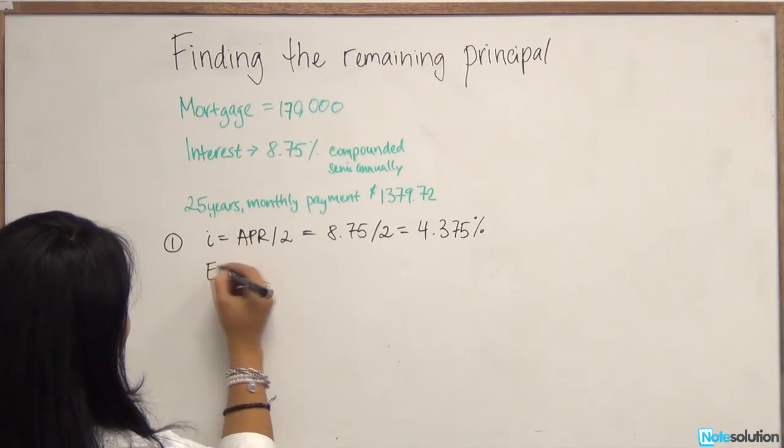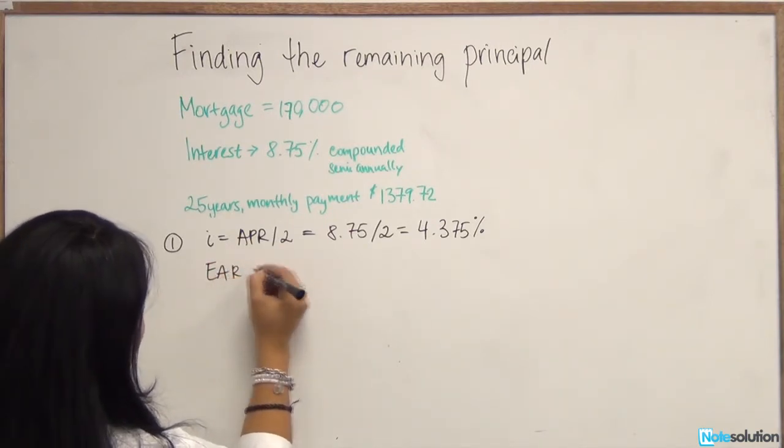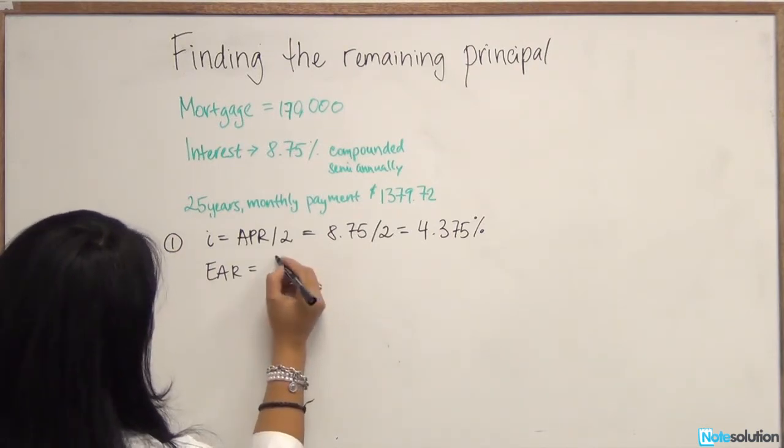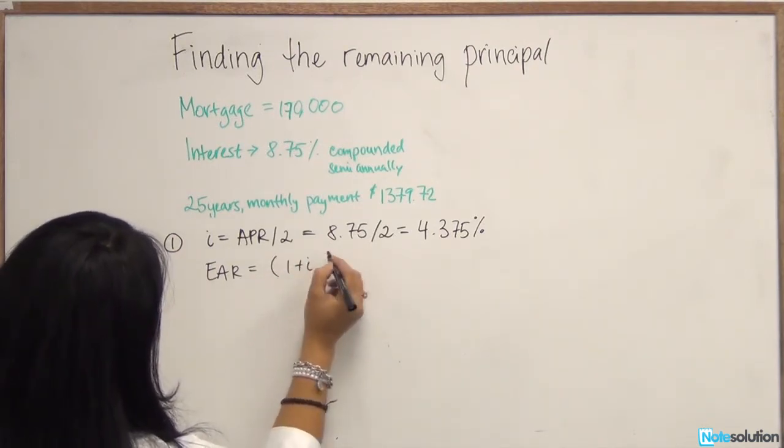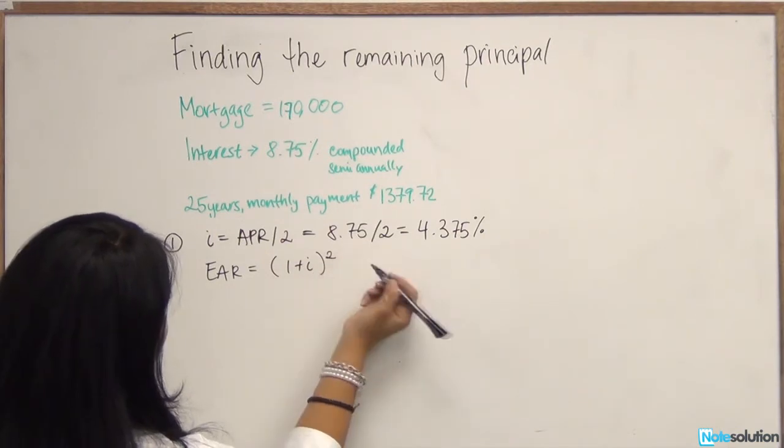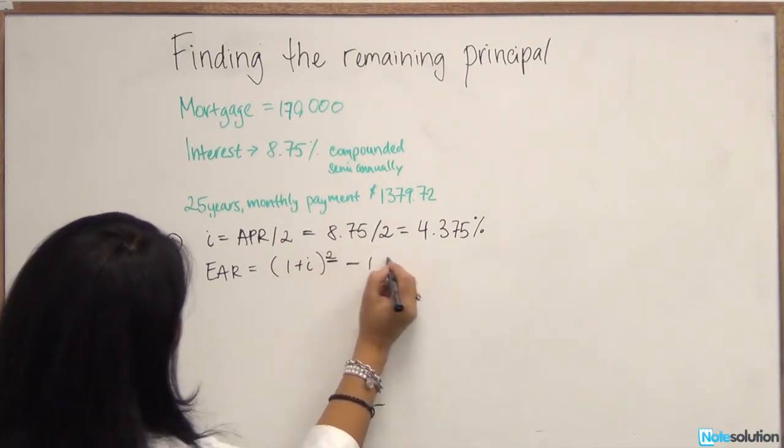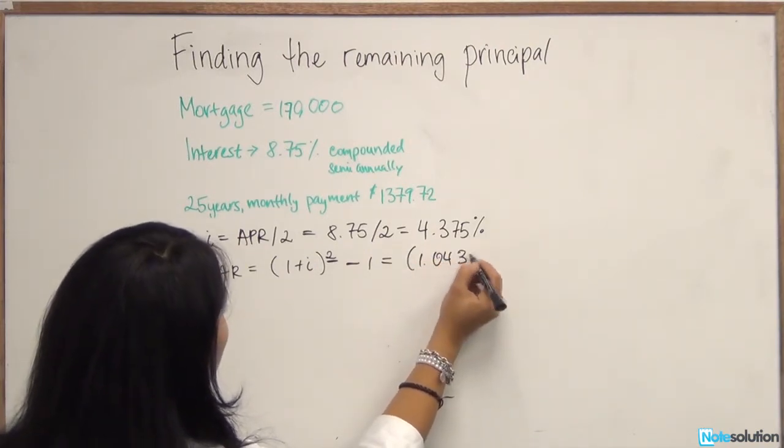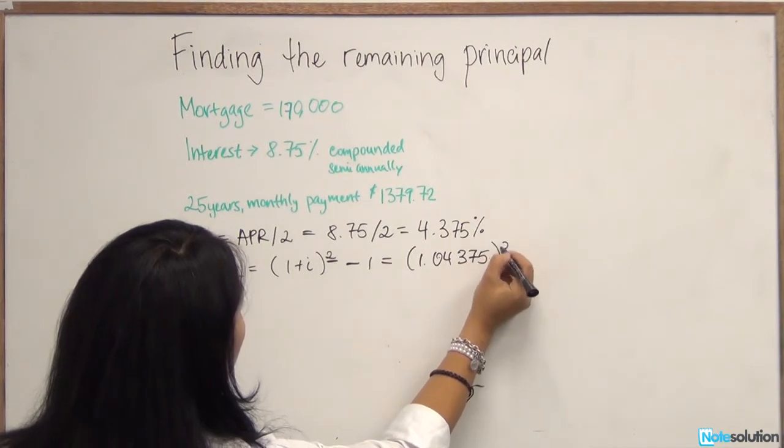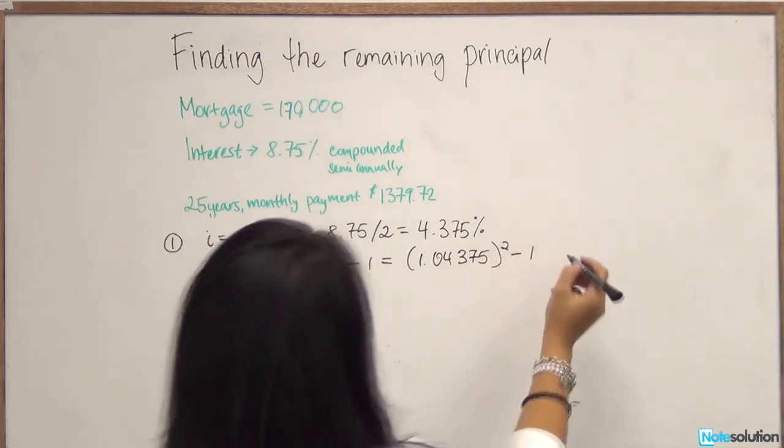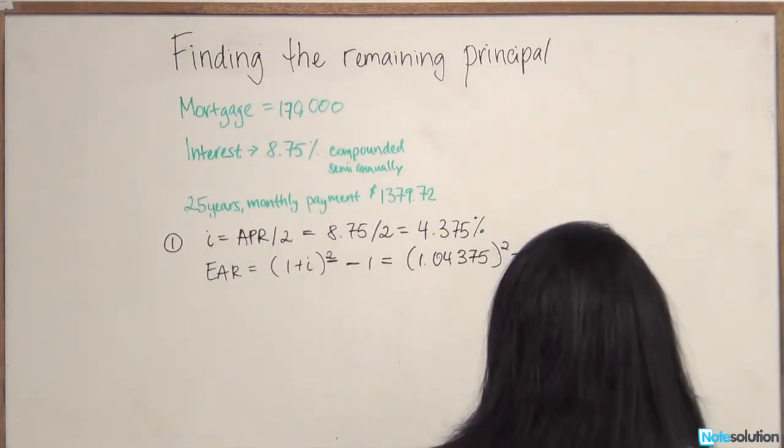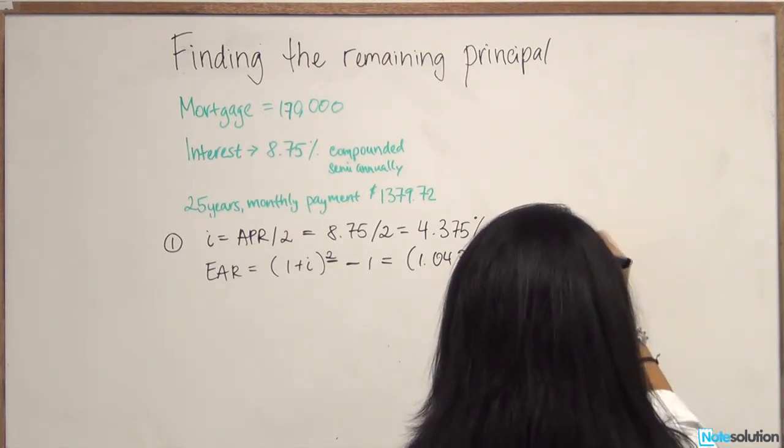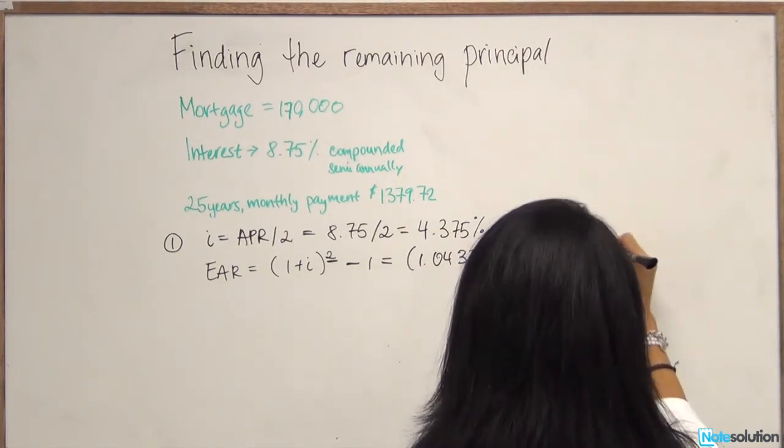Next, we can calculate our effective annual rate. Given semi-annual compounding, we know that our effective annual rate equals 1 plus i squared to reflect the semi-annual compounding terms, minus 1. So we have 1.04375 squared, minus 1. That gives us an effective annual rate of 8.9414%.